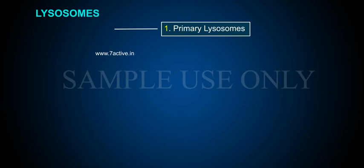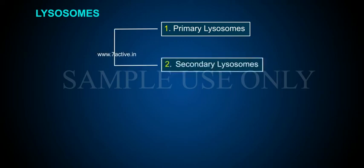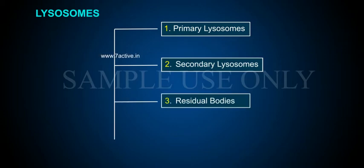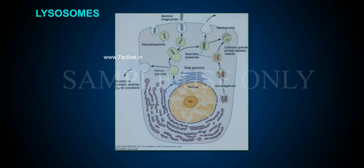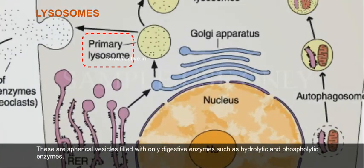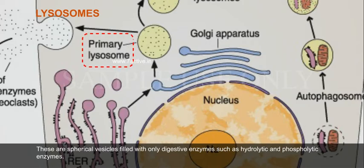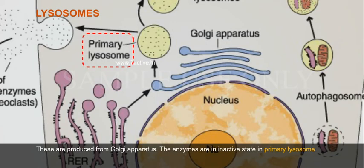1. Primary Lysosomes: These are spherical vesicles filled with only digestive enzymes, such as hydrolytic and phospholytic enzymes. These are produced from the Golgi apparatus. The enzymes remain in an inactive state in primary lysosomes.